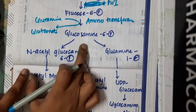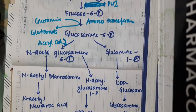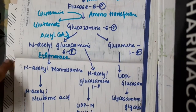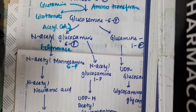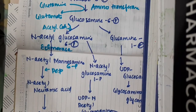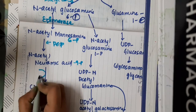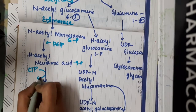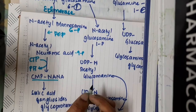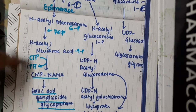Glucosamine-6-phosphate combines with acetyl-CoA to form N-acetylglucosamine-6-phosphate. In the presence of epimerase, it forms N-acetylmannosamine-6-phosphate. This combines with PEP to form N-acetylneuraminic acid-9-phosphate. This then combines with CTP, releasing inorganic pyrophosphate, to form CMP-N-acetylneuraminic acid, which gives rise to sialic acid, gangliosides, and glycoproteins.